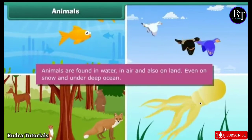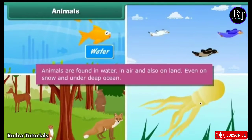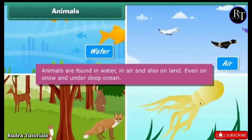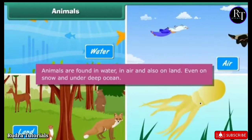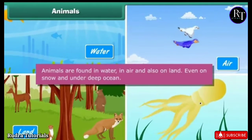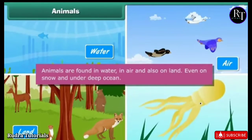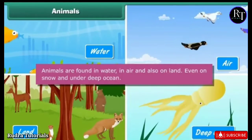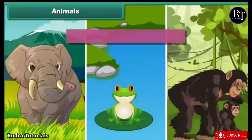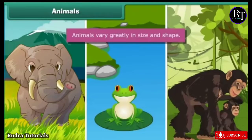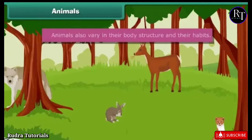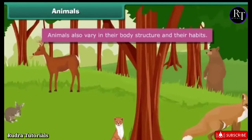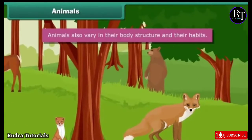Animals are found in water, in air, and also on land — even on snow and under the deep ocean. Animals vary greatly in size and shape. They also vary in their body structure and their habits.